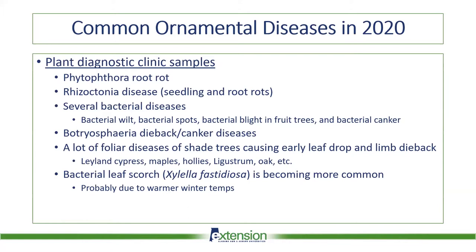This year we've had a very wet year, so they've seen a lot of Phytophthora root rots, Rhizoctonia diseases, several bacterial diseases like bacterial wilt, bacterial spots, blights, and canker. She's also seen some Botryosphaeria dieback and other canker diseases, and a lot of foliar diseases of shade trees causing early leaf drop and limb dieback, especially in Leyland cypress, maples, hollies, and ligustrum. In the last couple years she's also seen bacterial leaf scorch becoming more common, probably due to the warmer winter temperatures we've had.